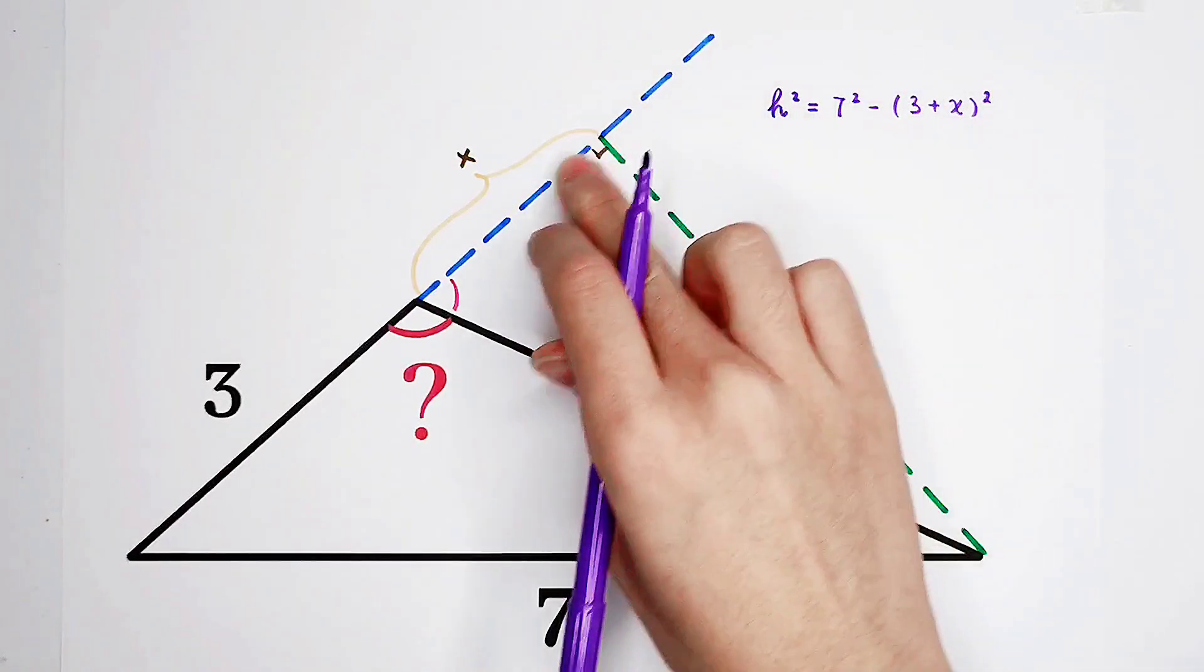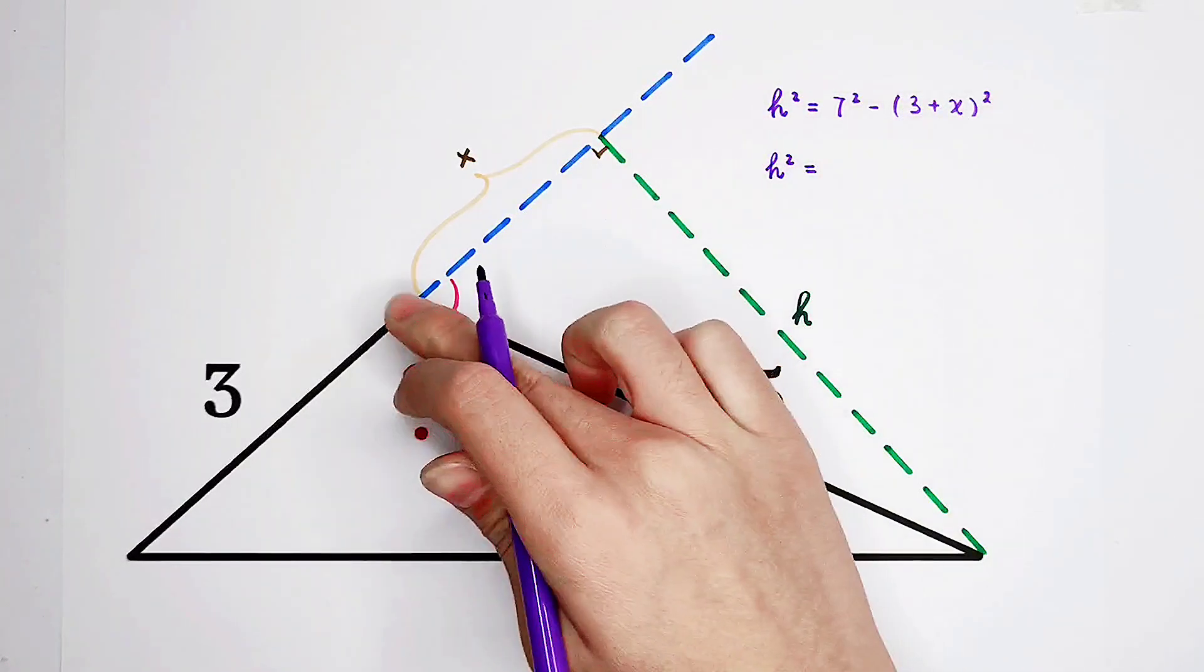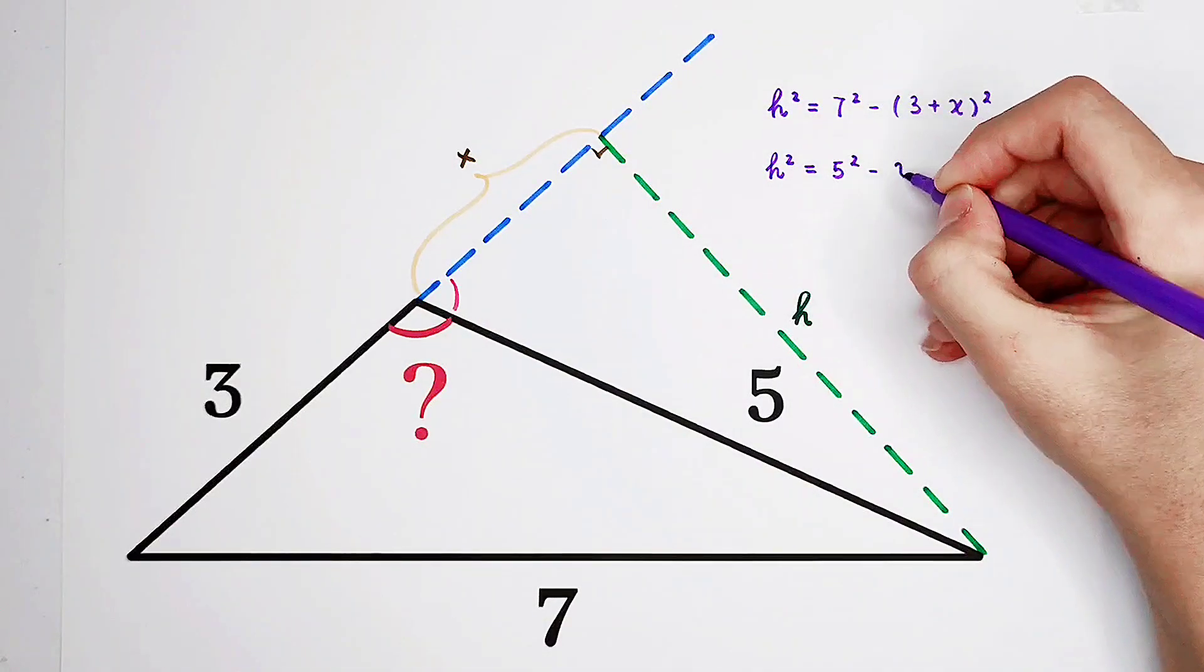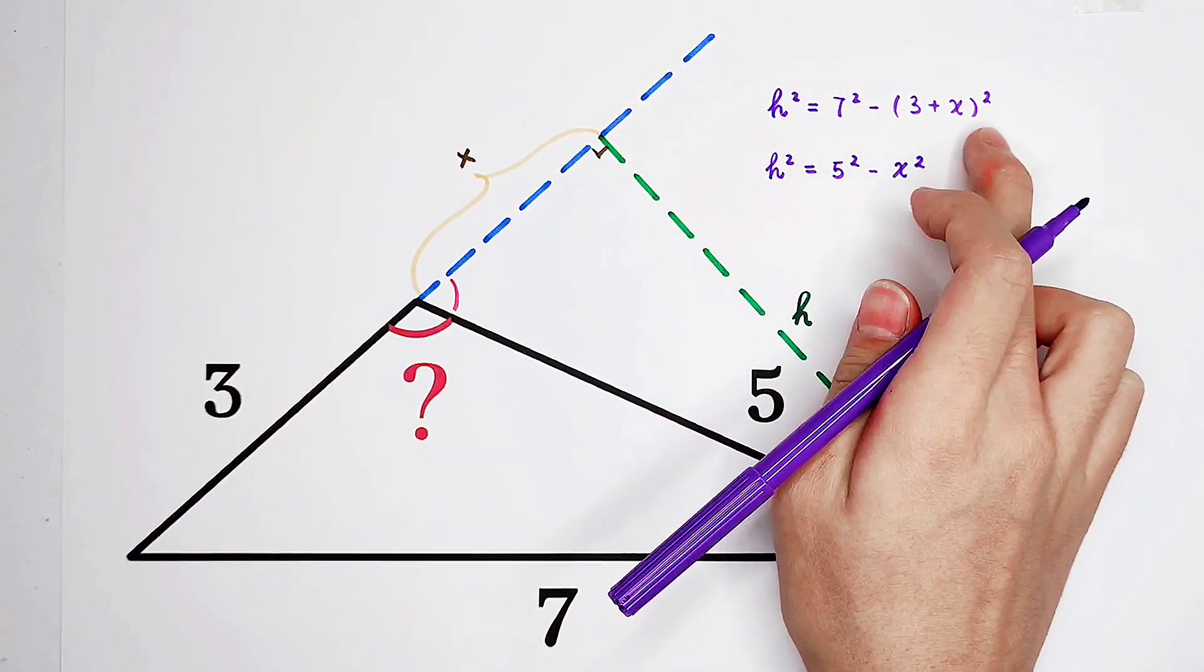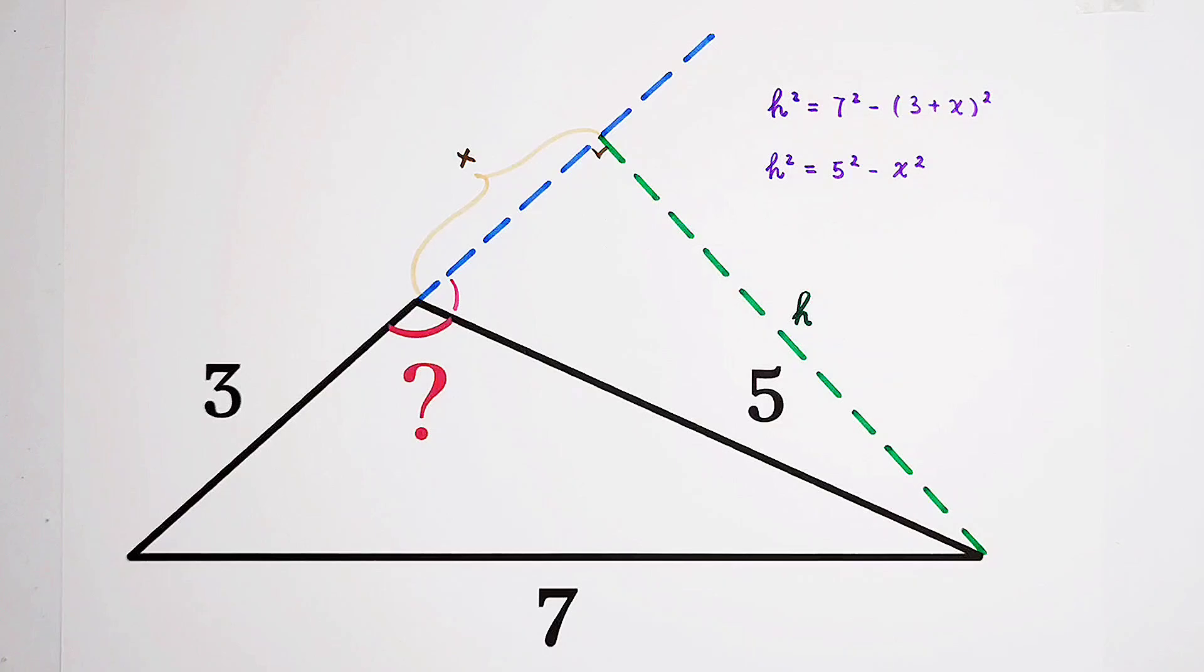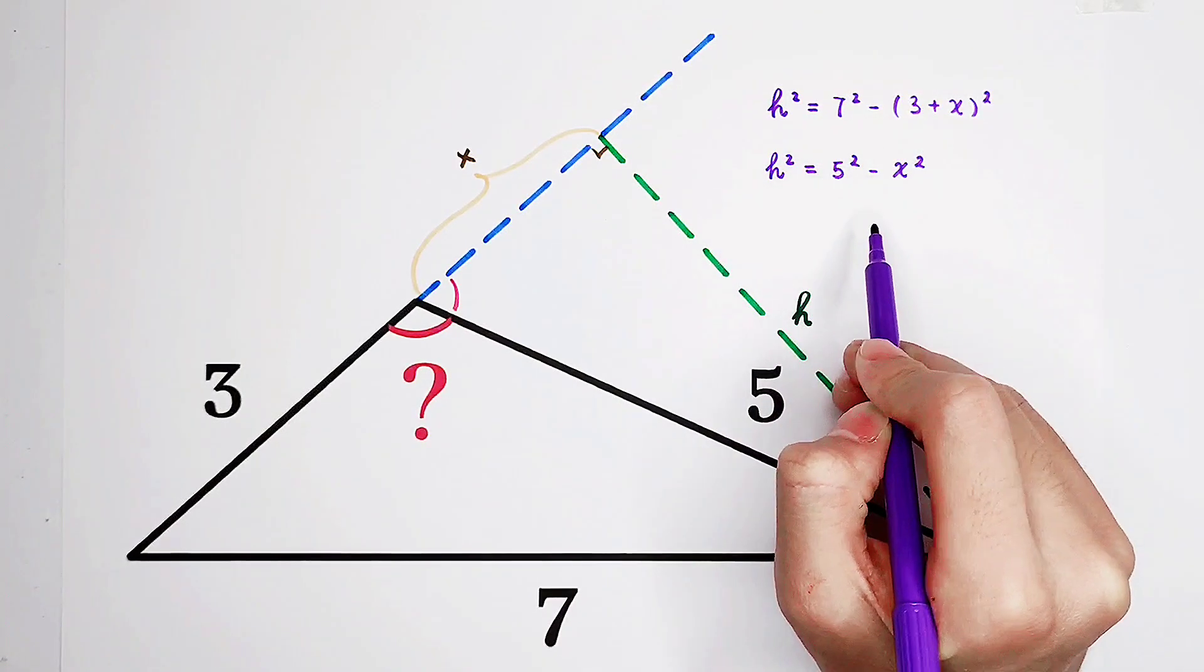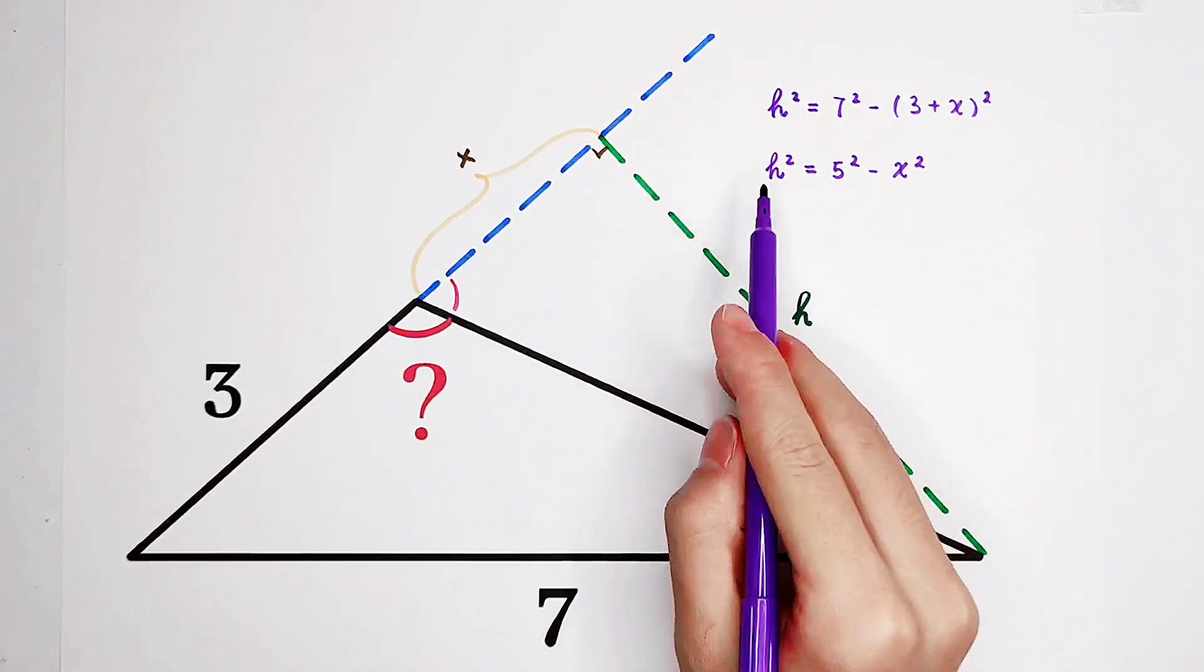However, in this small right triangle, we also have h squared is equal to 5 squared, because 5 is the hypotenuse, 5 squared minus x squared. So now I can see h squared is equal to this, at the same time, it is also equal to this. That means these two right-hand sides are equal. They are both equal to h squared.